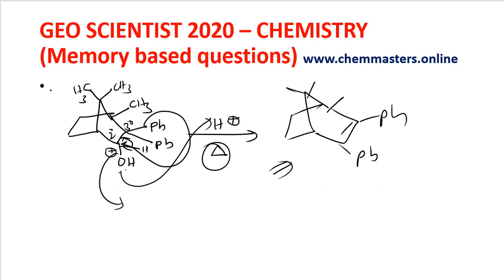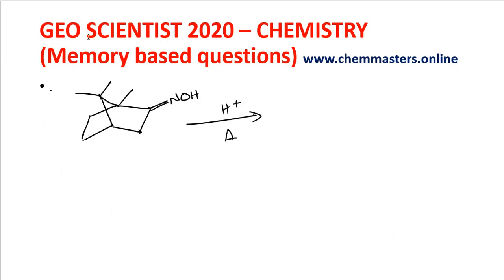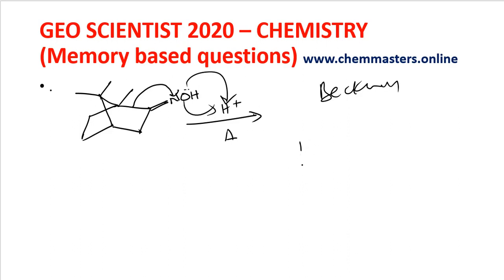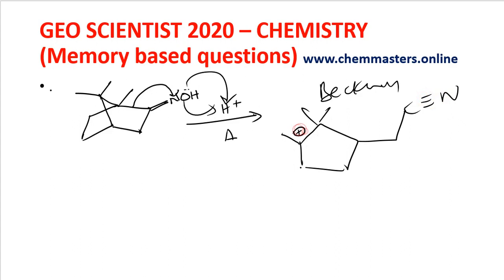Next question: by looking at the substrate and reaction conditions, you can identify this as Beckmann rearrangement. The hydroxyl group attacks H+, which cleaves. The bond cleaves to attack a nitrogen, giving C≡N with a positive charge. On further heating, hydrogen is placed to compensate, forming a double bond. You can see this as one of the options and it must be your answer.